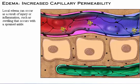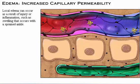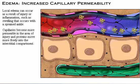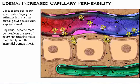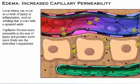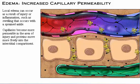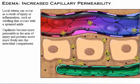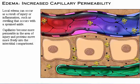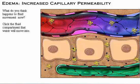Local edema can occur as a result of injury or inflammation, such as the swelling that occurs with a sprained ankle. In this case, capillaries become more permeable in the area of injury and proteins move more freely into the interstitial compartment. What do you think happens to fluid movement now? Click the fluid compartment that water will move into.